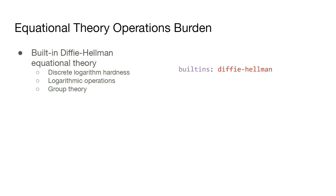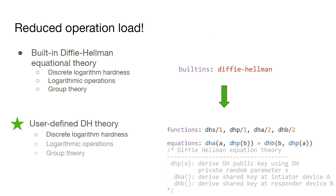Another thing we managed is the burden caused by different equational theory operations. Observing the built-in Diffie-Hellman equation theory, it provides properties of discrete logarithm hardness, logarithm operations, and group theory. Although these properties are great for a model, the crypto misuse attacks they enable are out of scope of our model and add a lot of burden to the verification process. So we define our own Diffie-Hellman equation theory assuming that the logarithm and group theory operations are perfect.